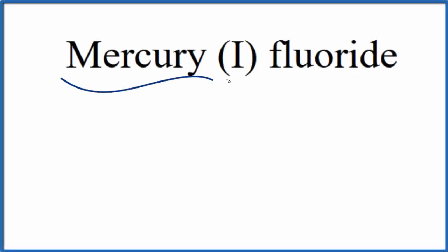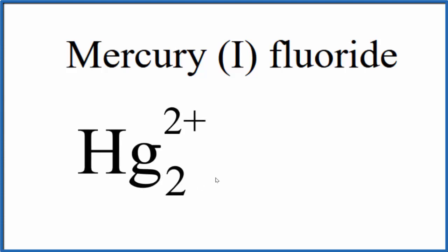To write the formula for mercury (I) fluoride, we need to realize that mercury (I) is a bit of an exception. When you see mercury (I), this is what you need to be thinking.